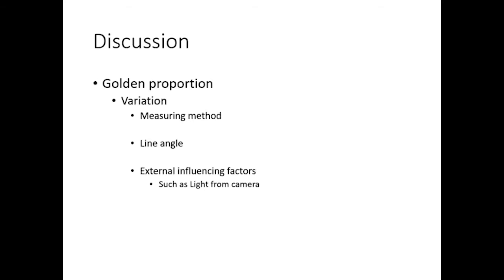In reading the articles on golden proportion, there are studies noting variation in measuring method, line angle, and external influence factors such as lighting from cameras, which affect the reliability of measurements.